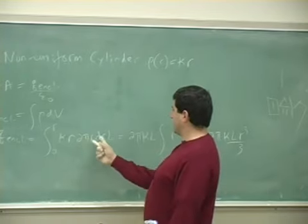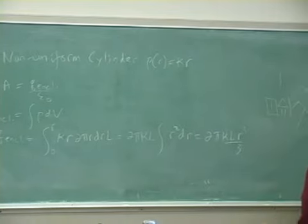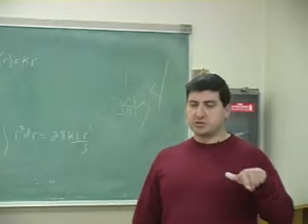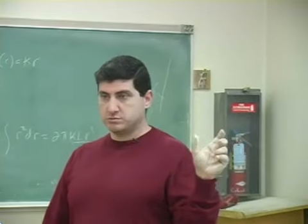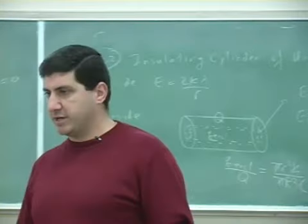Let's see, did I do that right? 2πκ comes out, L comes out, integral of r squared which is r cubed over 3. And now I do another integral for the big Q, but this time I don't have to redo it, it's just going to be the same thing with the big R.